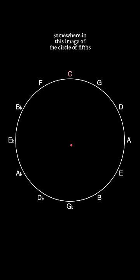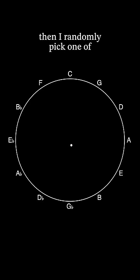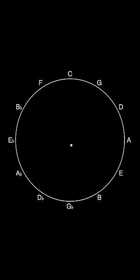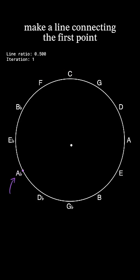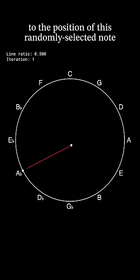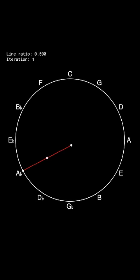Randomly draw a dot somewhere in this image of the circle of fifths. Then I randomly pick one of these three notes — for instance, A-flat. Then I make a line connecting the first point to the position of this randomly selected note and find the midpoint, and I draw another dot.